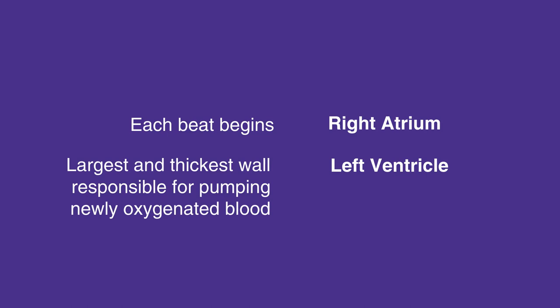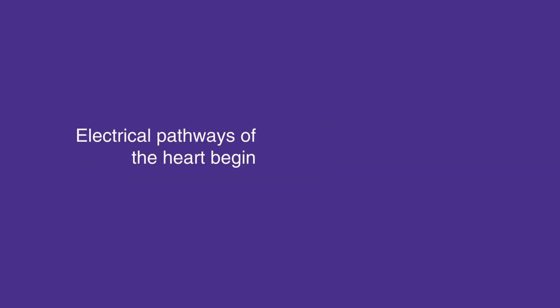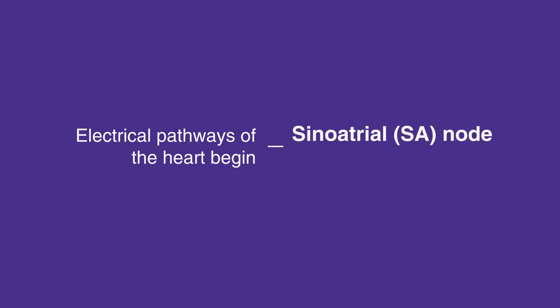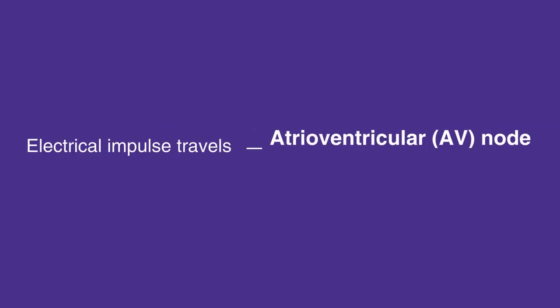as it is responsible for pumping the newly oxygenated blood to the rest of the body. The electrical pathways of the heart begin in the sinoatrial, or SA, node in the right atrium. Together, they create electrical activity that acts as the heart's natural pacemaker. This electrical impulse then travels to the atrioventricular, or AV, node, which lies between the atria and the ventricles.